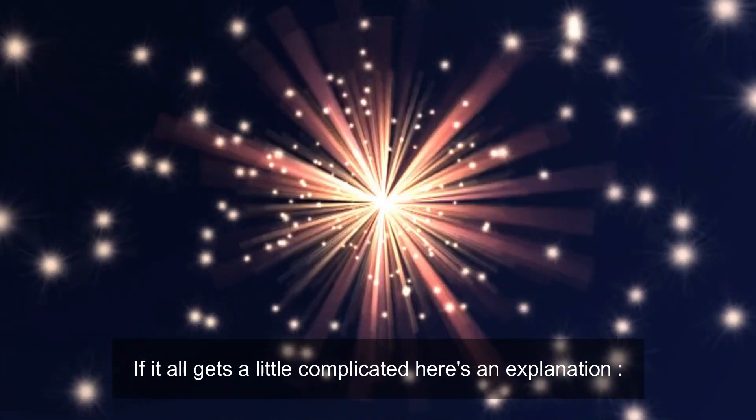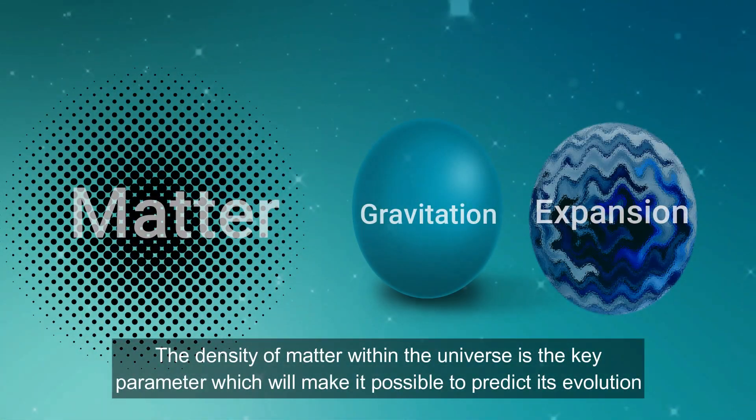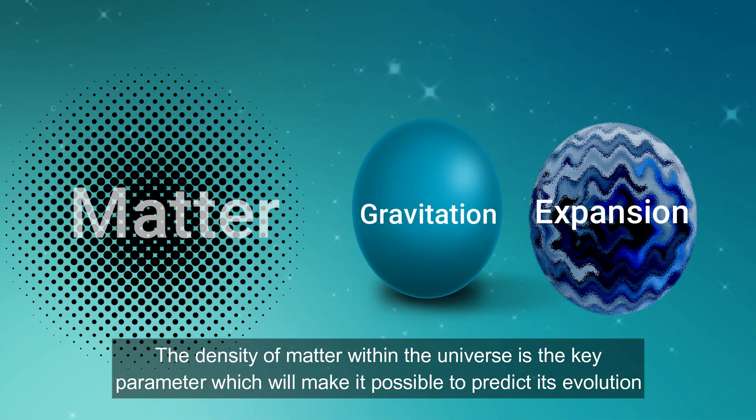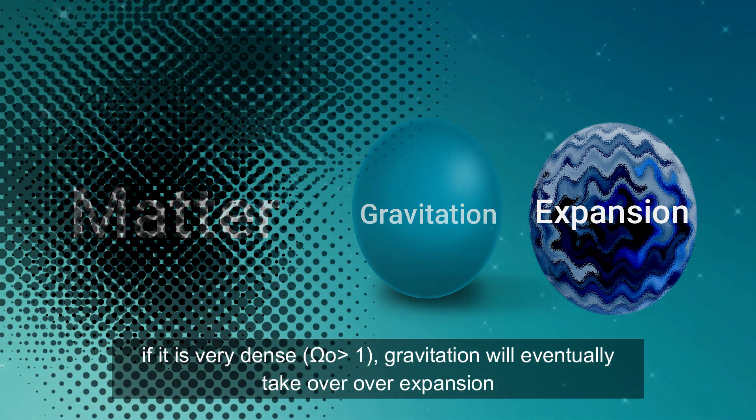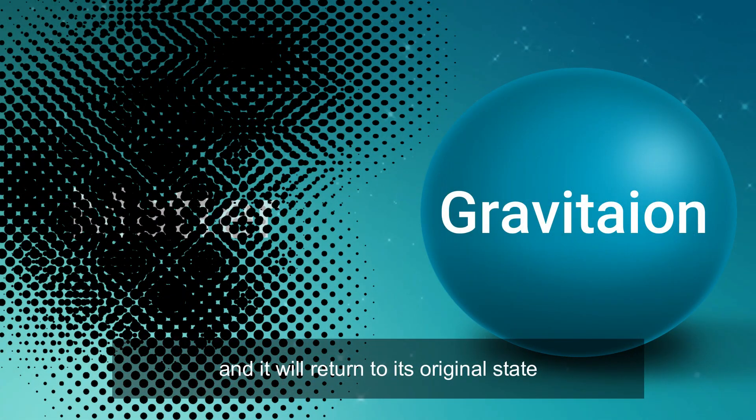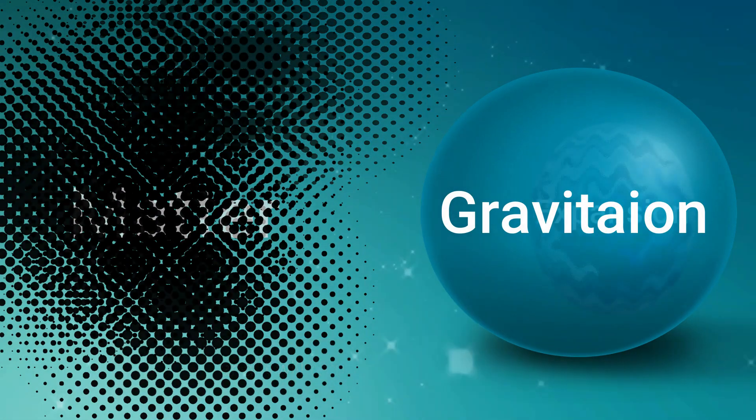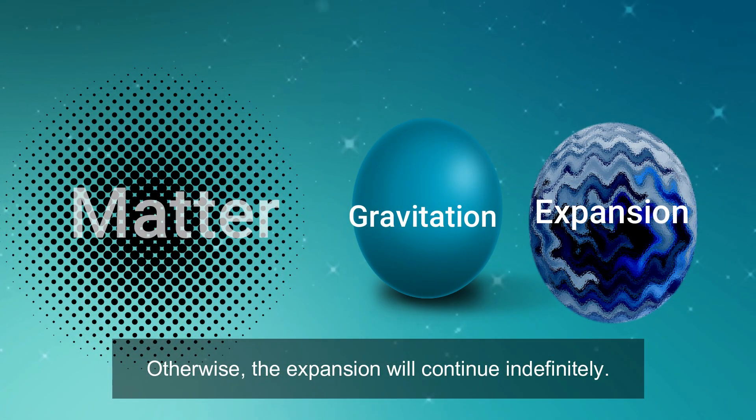If it all gets a little complicated, here is an explanation. The density of matter within the universe is the key parameter which will make it possible to predict its evolution. If it is very dense, gravitation will eventually take over the expansion and it will return to its original state. Otherwise, the expansion will continue indefinitely.